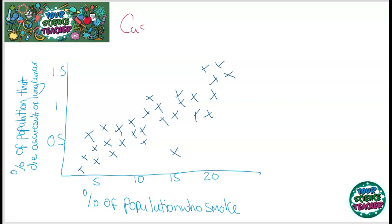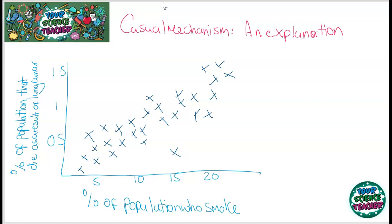A causal mechanism is when a scientist can explain a correlation. There is an explanation for the fact that people who smoke often die more from lung cancer. Scientists have observed that tar in smoke is carcinogenic, and if it's on people's lungs, it's likely to cause cancers. So this is a causal mechanism.